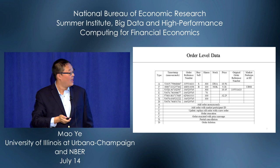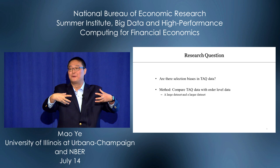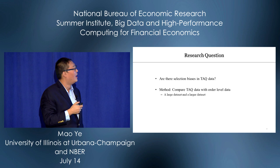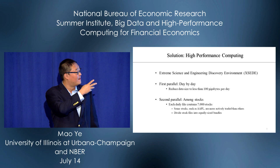So technically, we want to ask: are there any selection biases in the TAQ data? We're trying to compare a large dataset with an even larger dataset. This is very data intensive. We used high performance computing to make this work.